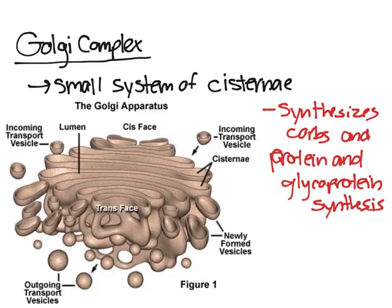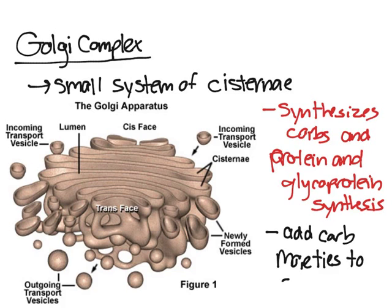It cuts and splices the proteins — on some proteins you have to take out certain segments of it, and the Golgi complex helps do that. It can also add carbohydrate moieties to some proteins, which essentially means it adds a little chain of carbs to the proteins to make a glycoprotein, for example.